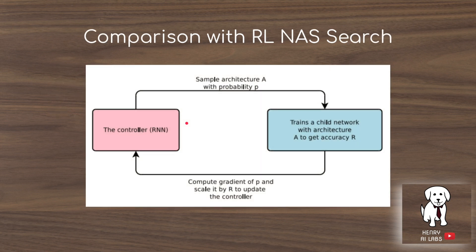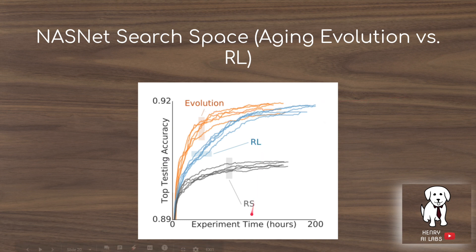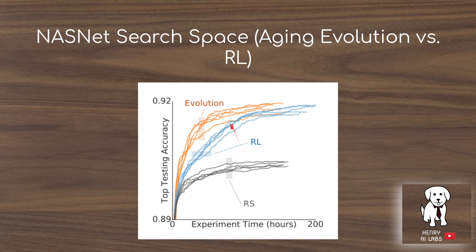They compare their evolutionary search algorithm with the reinforcement learning technique, which trains an LSTM agent controller to sample and train architectures on CIFAR-10. Random search performs much worse than both sophisticated techniques. The evolutionary algorithm finds high-performing solutions much quicker than RL, though it appears to saturate sooner. With limited computational resources, evolution would outperform reinforcement learning, especially with techniques like population-based training that don't require restarting and retraining models.